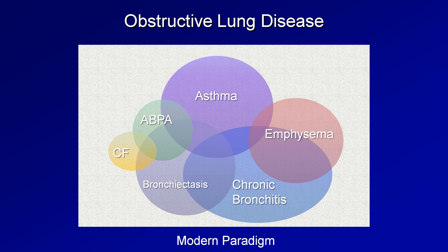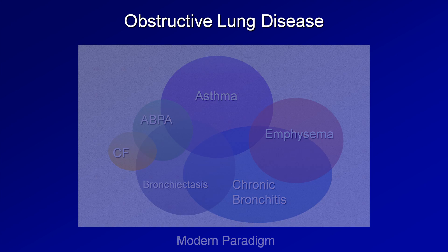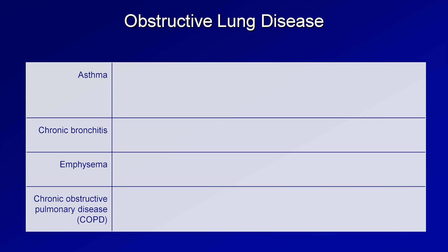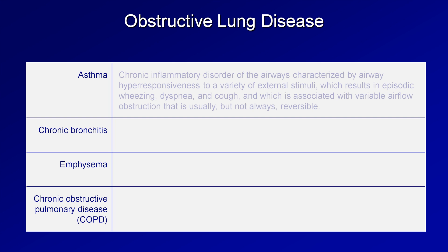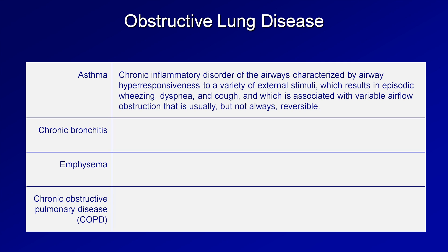There is also a variation to this modern paradigm which will help us understand how the term COPD fits into all of these other diagnoses. To understand the variation, I'll need to go over four definitions. Let's start with asthma. The contemporary definition of asthma is that it's a chronic inflammatory disorder of the airways characterized by airway hyperresponsiveness to a variety of external stimuli, which results in episodic wheezing, dyspnea, and cough, and which is associated with variable airflow obstruction that is usually, but not always, reversible.